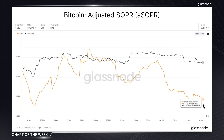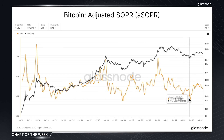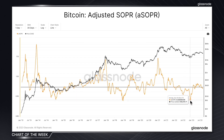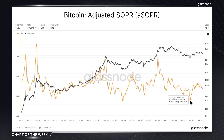So what's the actionable insight here? For directional traders, the current read on the aSOPR metric calls for caution. The prevailing sentiment is bearish, and historically, when the aSOPR remains consistently below 1, it can be a sign of further downward pressure. Those considering entering or increasing their positions might want to wait for more bullish signals, or use this period to strategise entry points. For those already in positions, it might be a time to consider protective measures or re-evaluate stop-loss levels to hedge against any further drops.